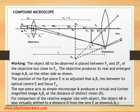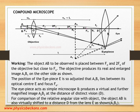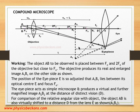The objective produces a real and magnified image A1B1 on the other side, beyond 2FO. The position of the eyepiece is adjusted so that the image A1B1, which acts as the object for the eyepiece, lies between the optical center E and the principal focus FE. The eyepiece then acts as a simple microscope or magnifying lens and produces a virtual, further magnified image A2B2 on the same side. For clear vision, this final image is taken at the distance of distinct vision.